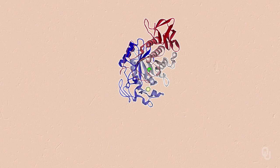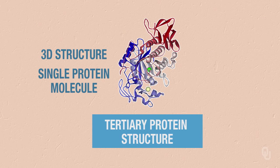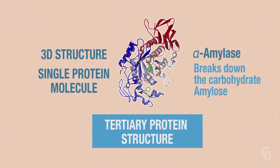When we look at the tertiary structure, at this point we're getting to the full three-dimensional structure of a single protein molecule. As we can see here, we have alpha amylase. The alpha amylase is going to be important in the breakdown of our carbohydrate, amylose. This protein is the enzyme that is essential to create the maltose that we're going to need in the fermentation process.